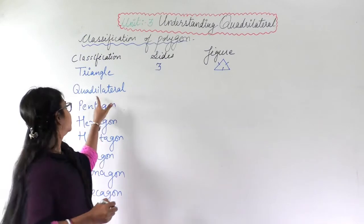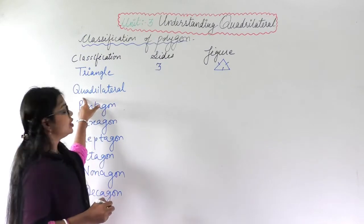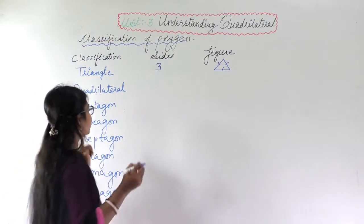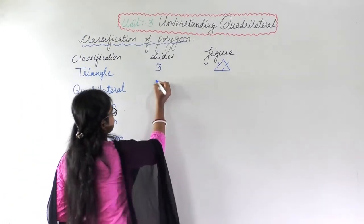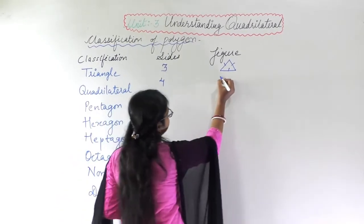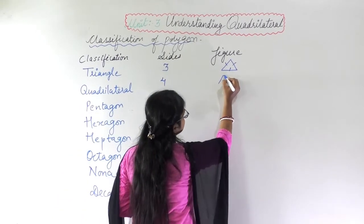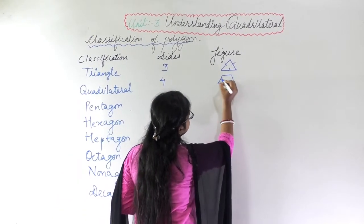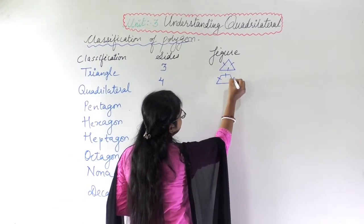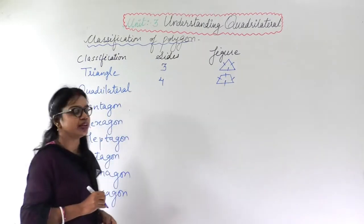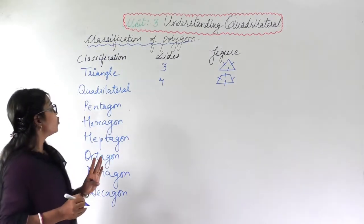Similarly, quadrilateral — the word 'quad' suggests four. So how many sides? Four sides. I can make this shape with one, two, three, four sides. A quadrilateral has four sides.